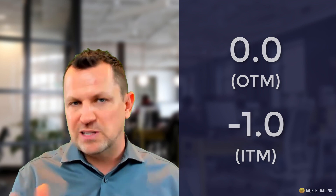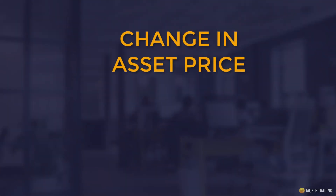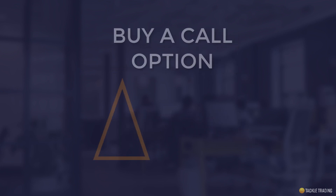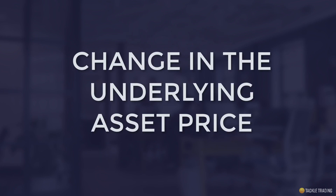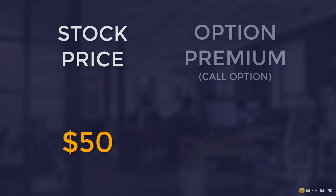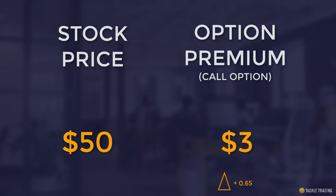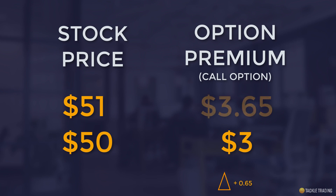If we control for some of the variables, it's easy to understand the Delta. Let's look at a change in the underlying asset price — up a dollar or down a dollar — and imagine we bought a call option with a Delta of 0.65. Let's say the stock price is at $50 even and the in-the-money call option premium is $3. If the stock price rises $1 from $50 to $51 and we have a positive Delta of 0.65, that option premium is going to go up $0.65. This doesn't account for the Gamma, which can change the Delta a little bit, but as a quick rough estimate, the option premium goes up $0.65.